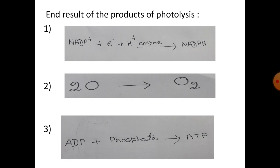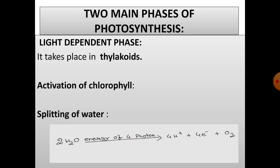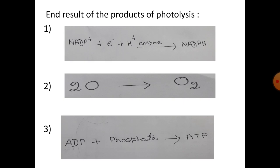The end result of the product of photolysis. This splitting of water molecule, this process is also known as photolysis, which means splitting by light. The hydrogen ions are picked up by a compound, that is NADP.